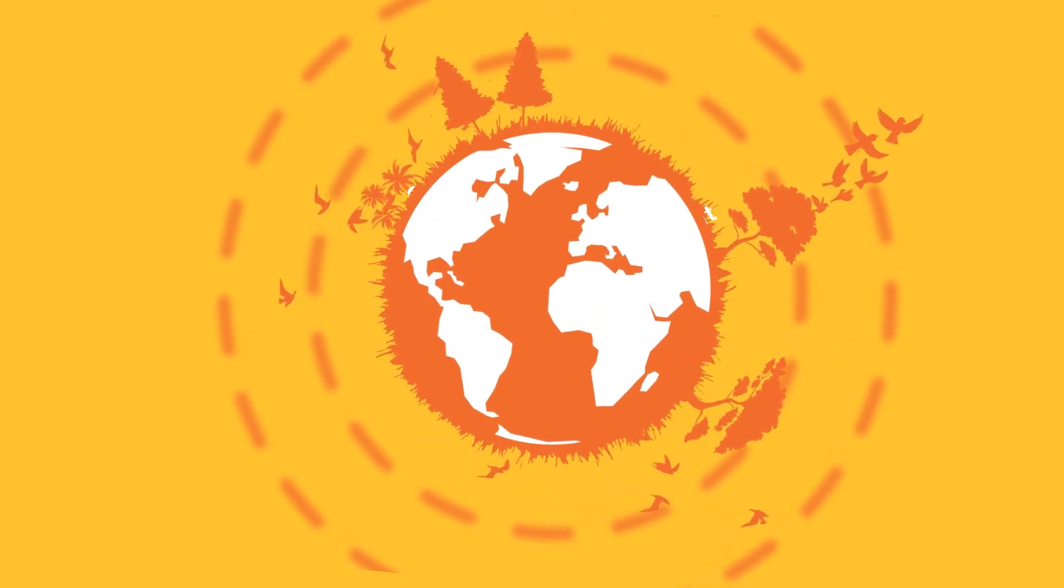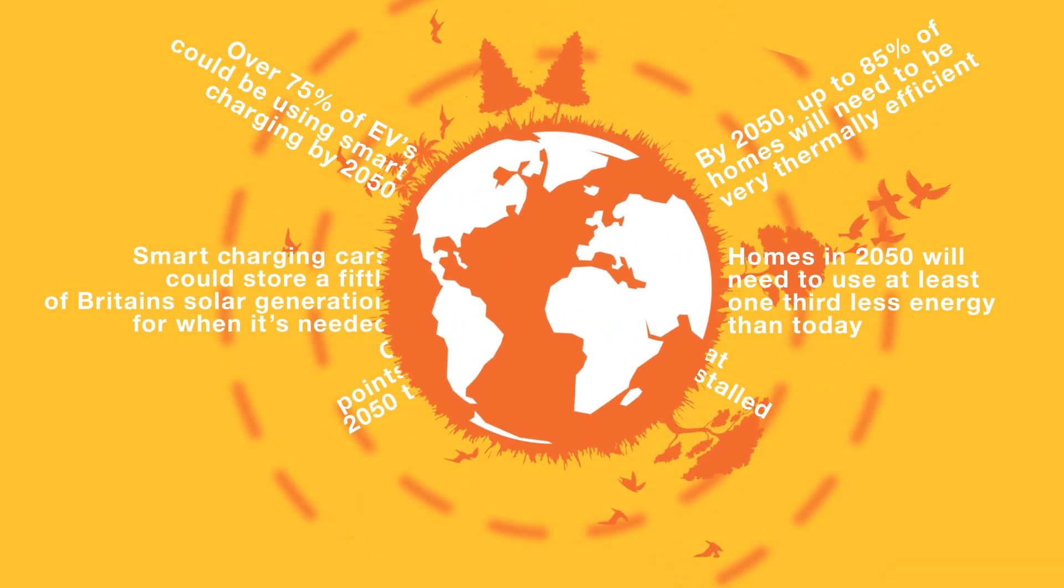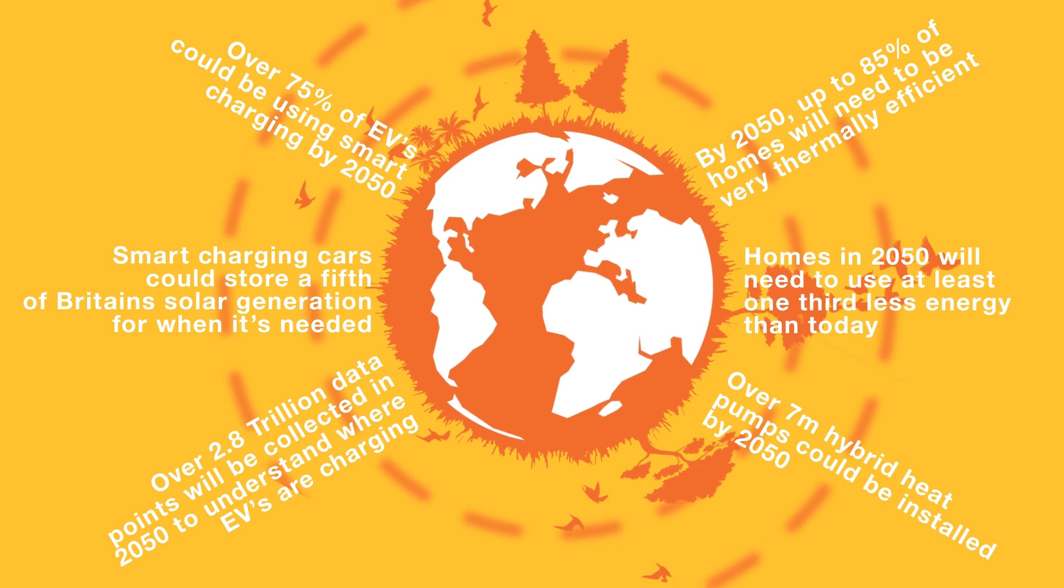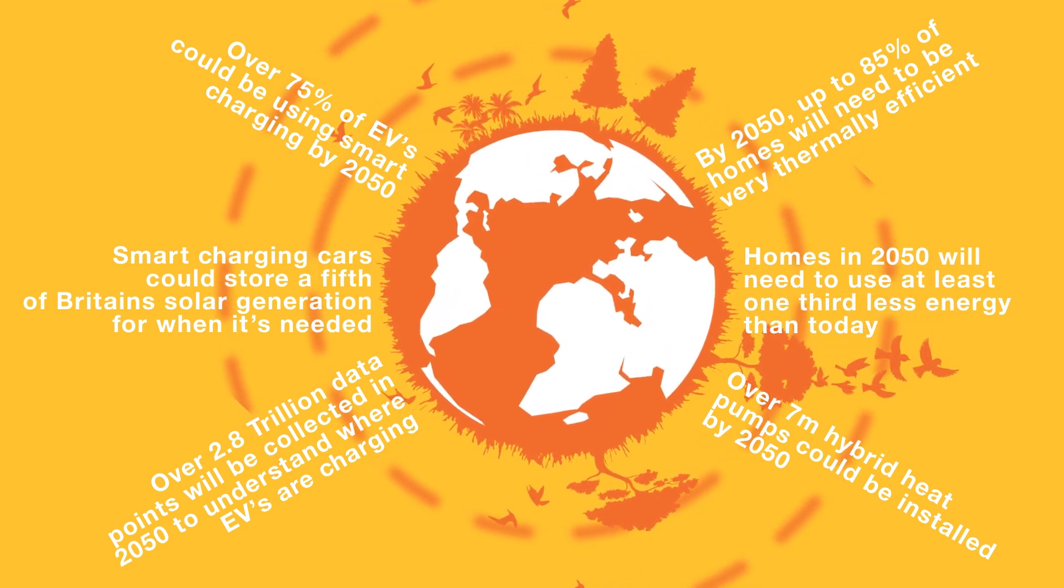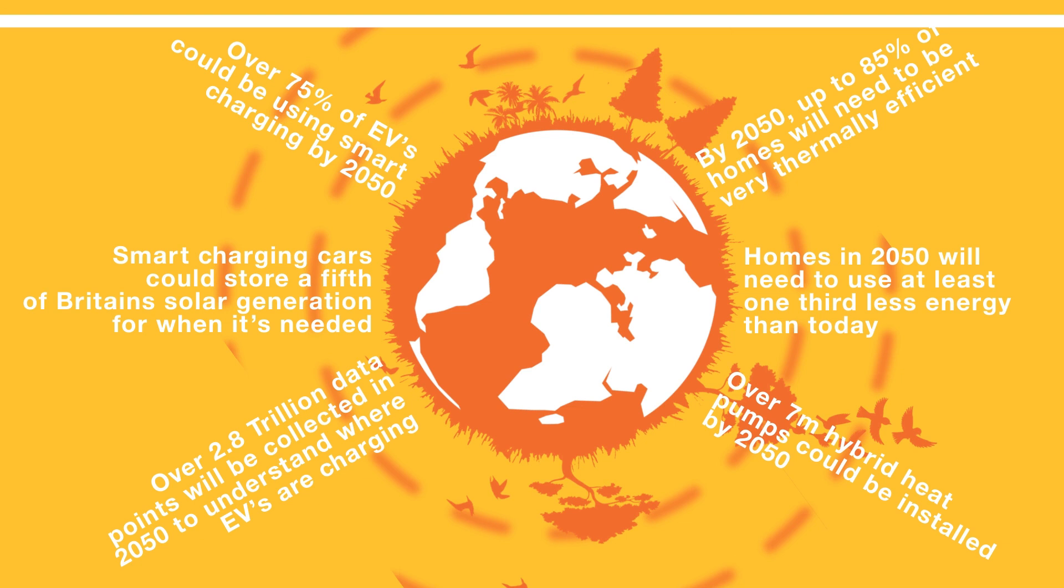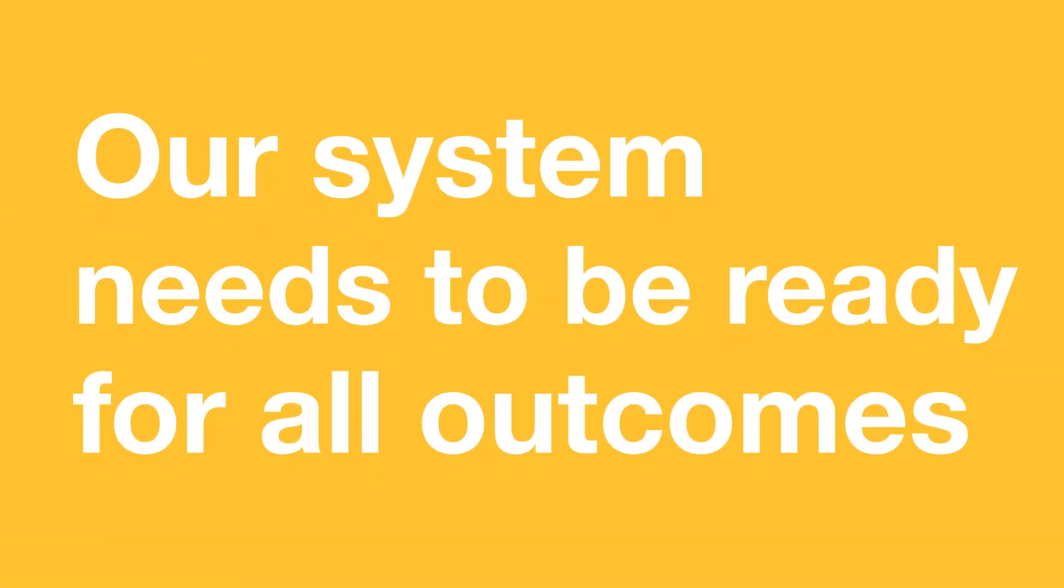It's not as simple as preparing for one future, because we don't know exactly how things will turn out, so we need to be ready for everything. For example, we know that EVs are becoming more mainstream, but we don't know how many will be on the roads exactly and how people will charge them. So our system needs to be ready for all outcomes.